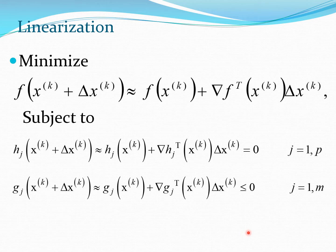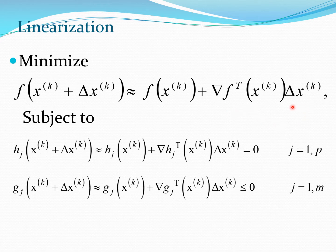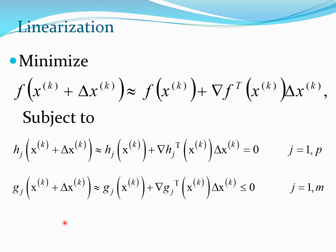Let us do the Taylor series approximation, starting with the cost function itself. We take f(x) and retain only the first term: the function value at x_k plus the gradient of the function at x_k dotted with delta x_k, which is the move in the design space. We form one Taylor series for f, one for h, and one for g. For h and g, you have 1 to p equations and 1 to m expressions respectively.